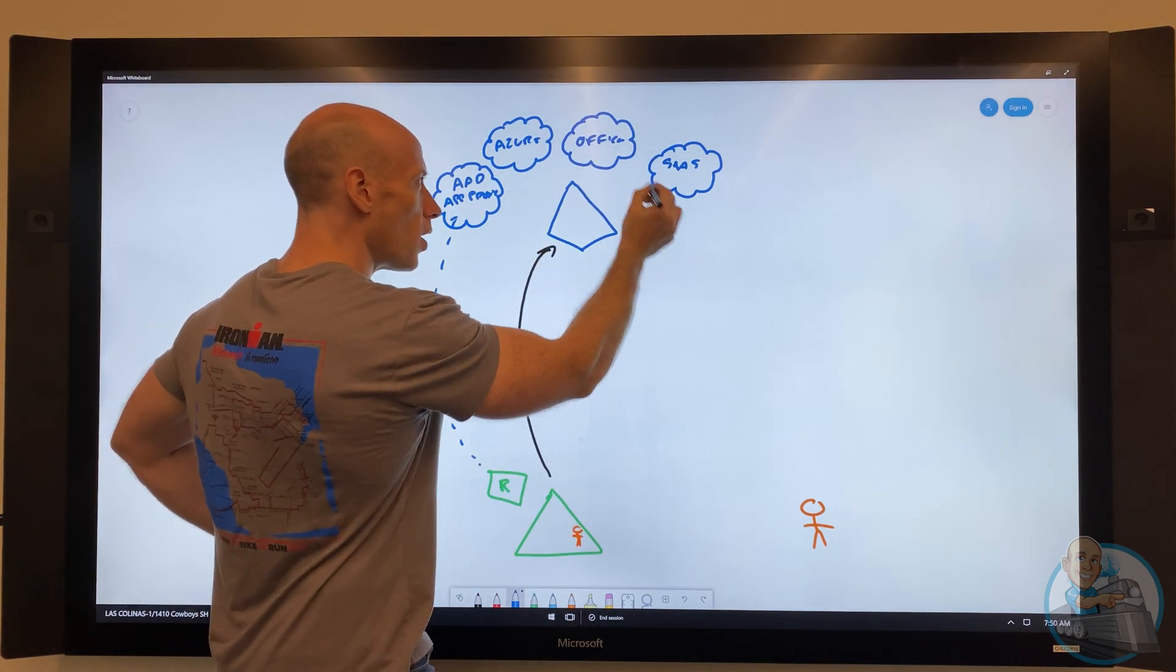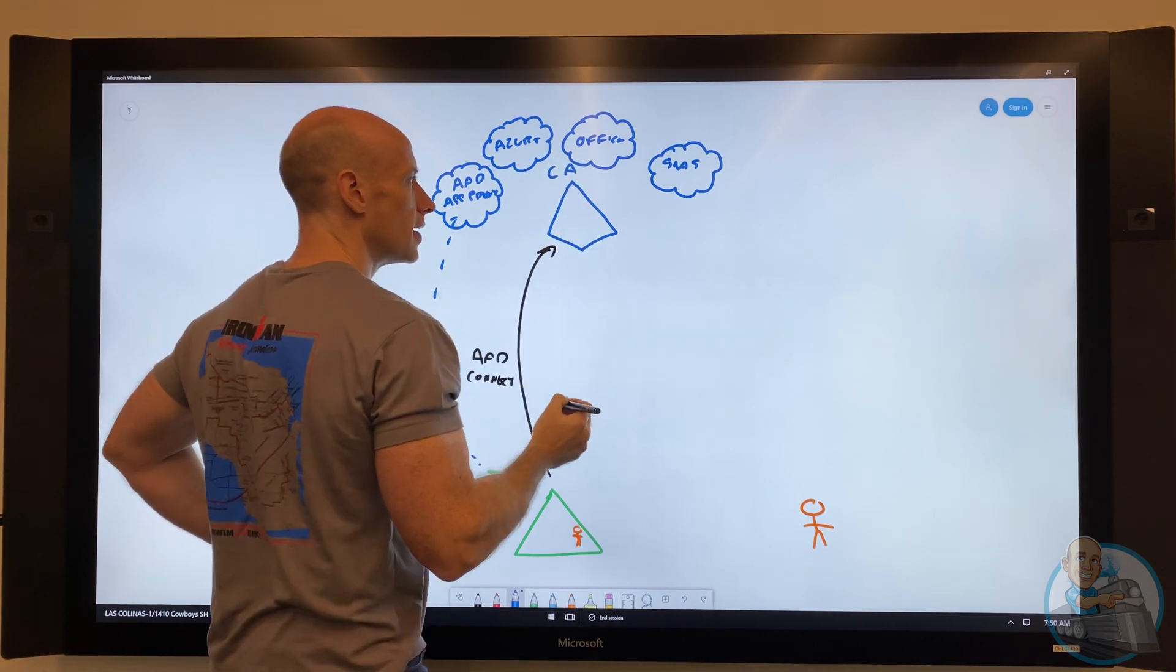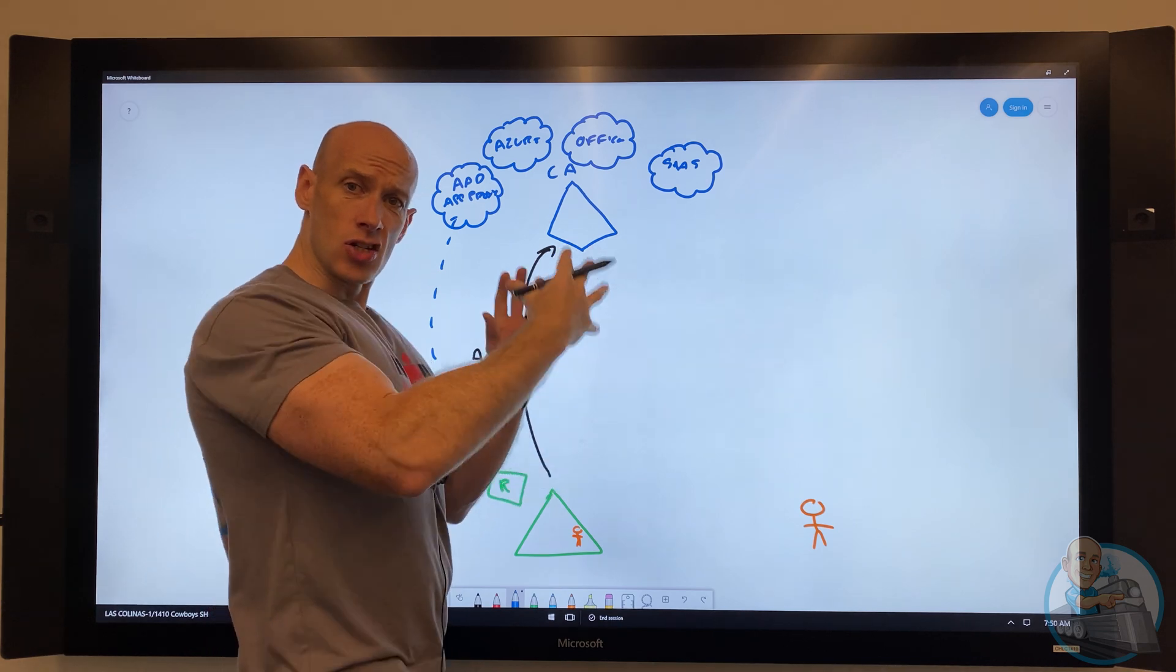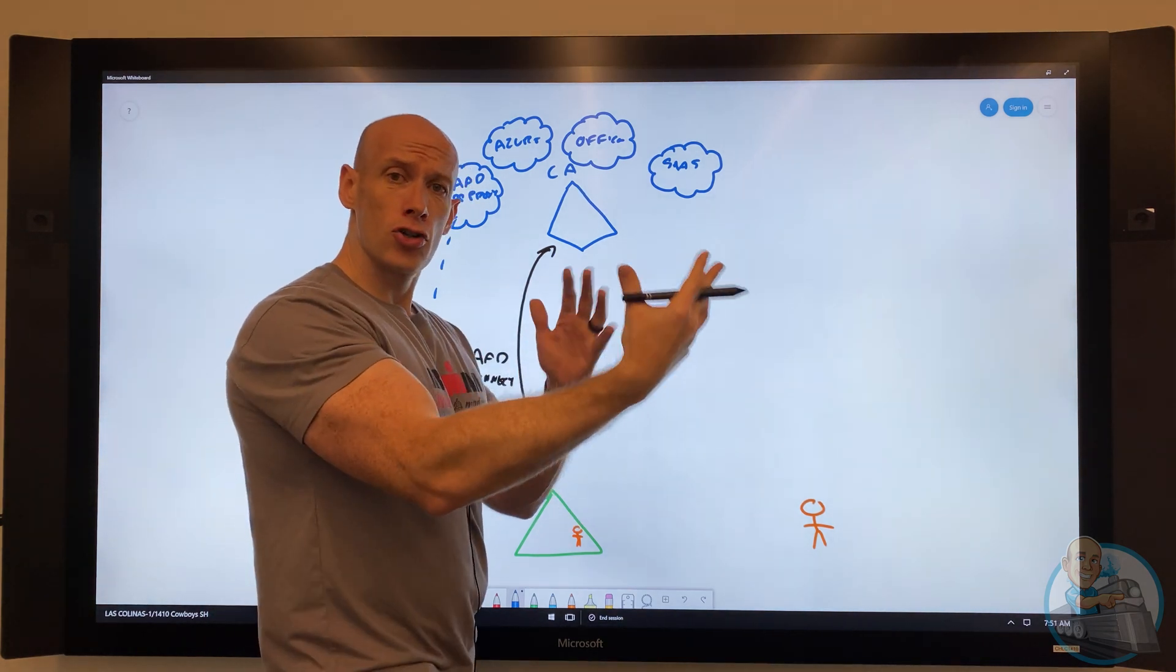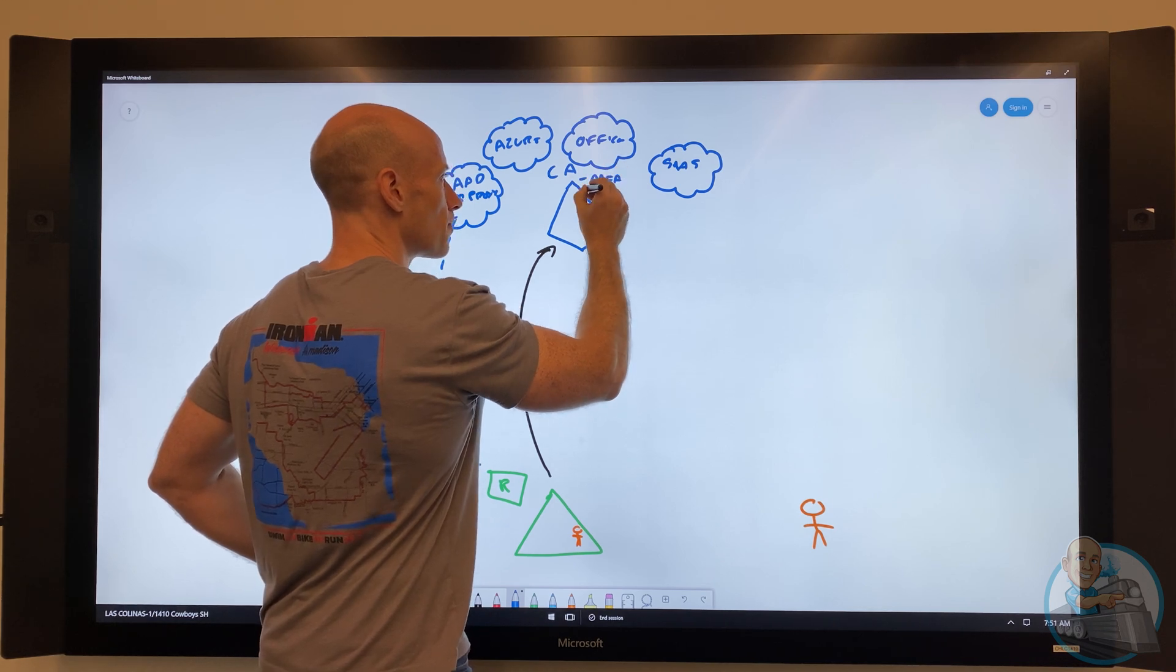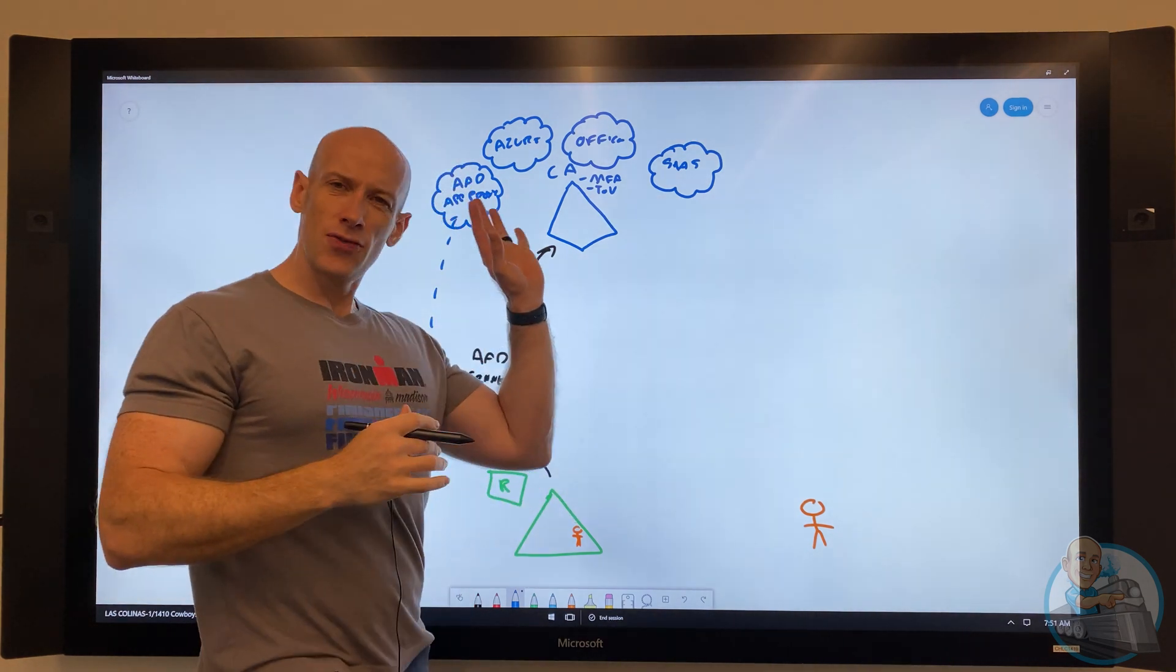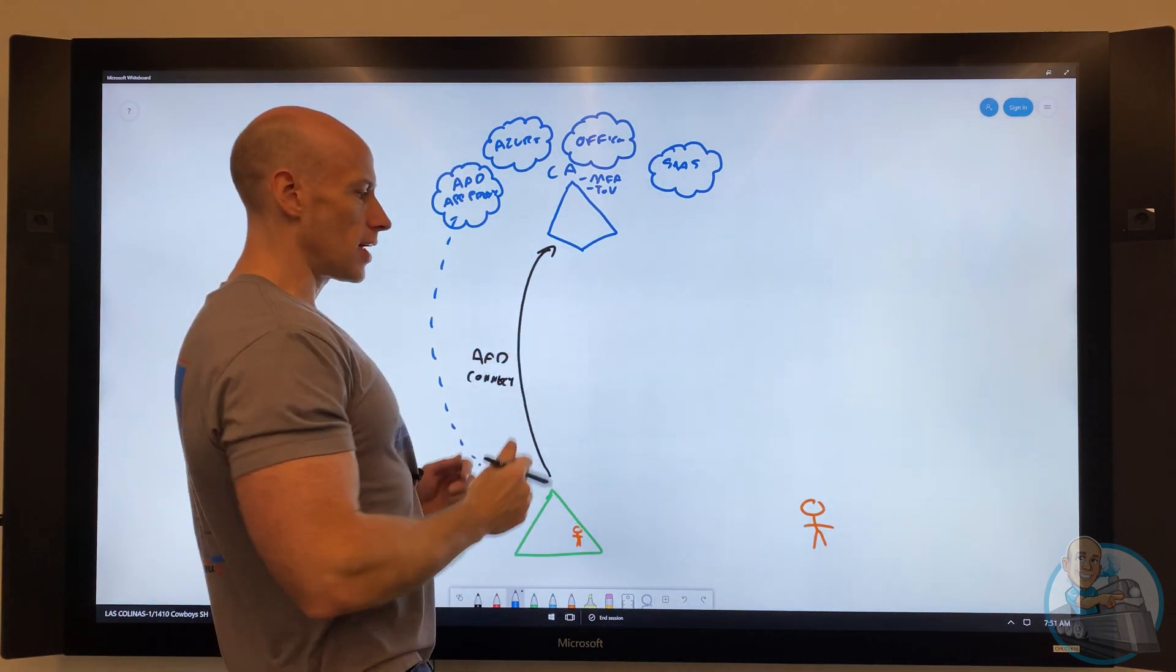And through all of those, I have things like conditional access, CA, where I have a set of conditions, and then I can have controls. And it's very common to have things like, well, I'm going to have MFA. I'm going to have a terms of use. So that's phenomenal for everyone in my organisation.